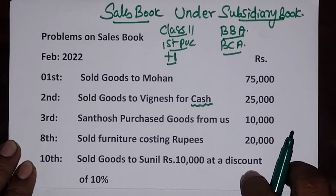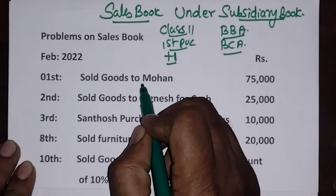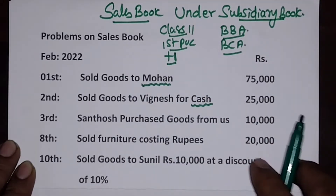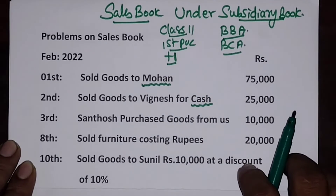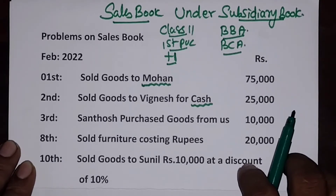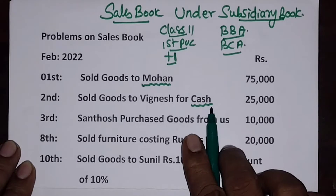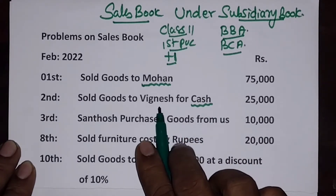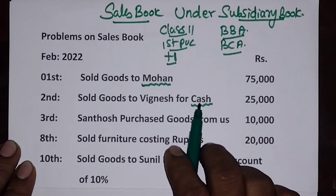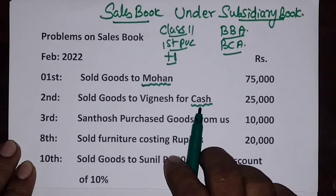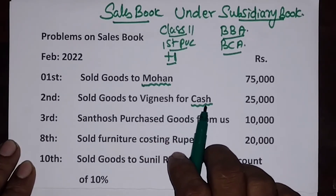How do we know whether it is a credit purchase or credit sales? The easy way is that whenever the name of a person is given, it is an indication that goods are purchased on credit. If it is for cash, they will mention 'cash'. Whenever the name is not given, it is 100% confirmation that it is a cash purchase.